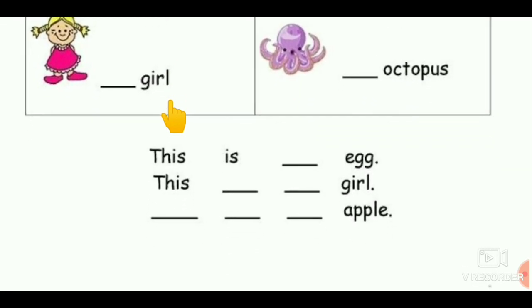Under the table, we have some blanks. So, fill these blanks with suitable ones. This is dash egg. Here, write A or AN. Okay? This dash dash girl. Here, use helping verb and use article also, A or AN. Okay, children? Here, fill these blanks. Use first one and second one and third one. Fill the blanks.